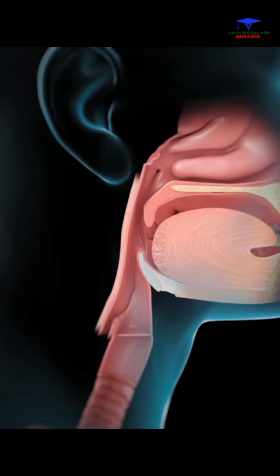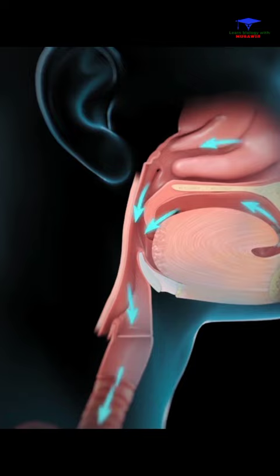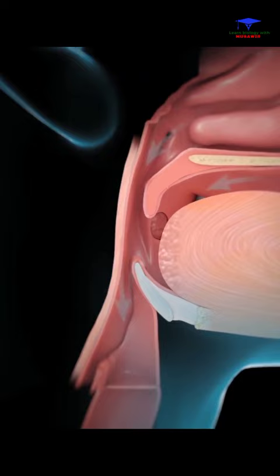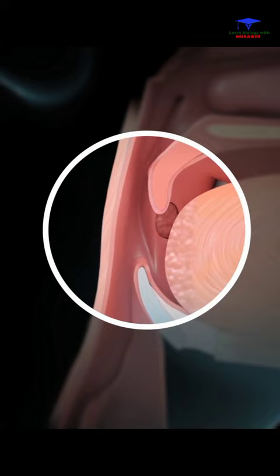Each time you breathe in, negative suction pressure pulls the soft tissues in your mouth and pharynx inward. The muscles in your pharynx respond by pulling the soft tissues outward again, which keeps your airway open.